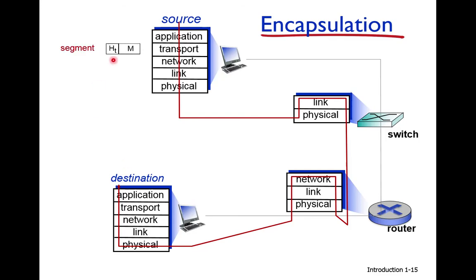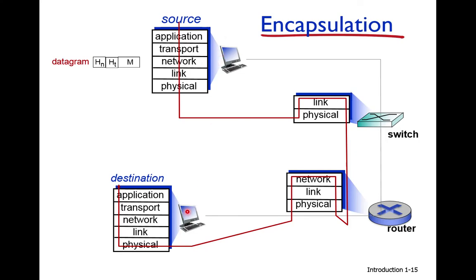That header information is added to the message and then the transport layer, like the registrar, passes the data to the network layer — the TCS office. The network layer adds its own header containing the source machine address and the destination machine address. The network layer then computes the best path, just like TCS computes the best route from Wah to Islamabad.